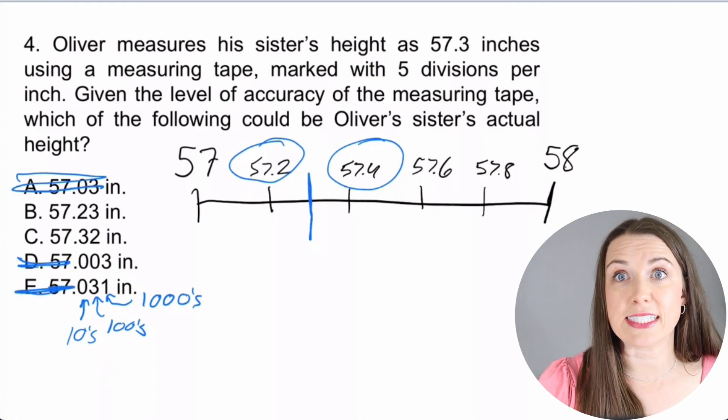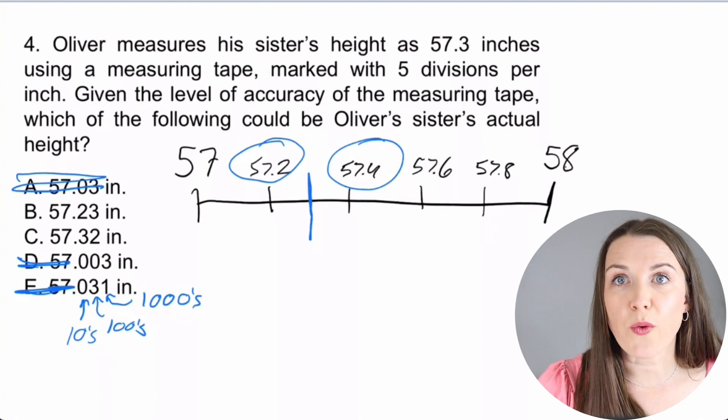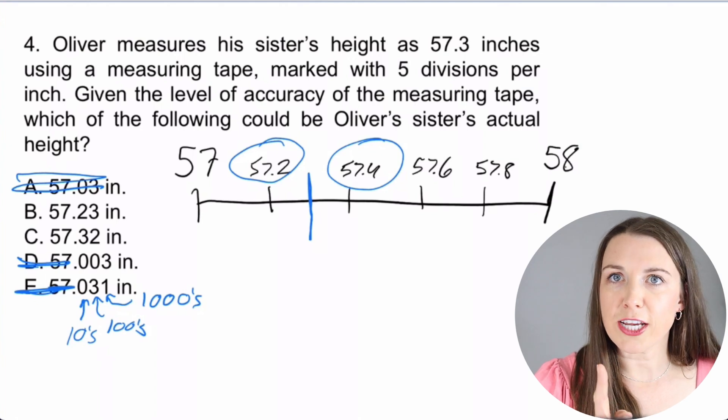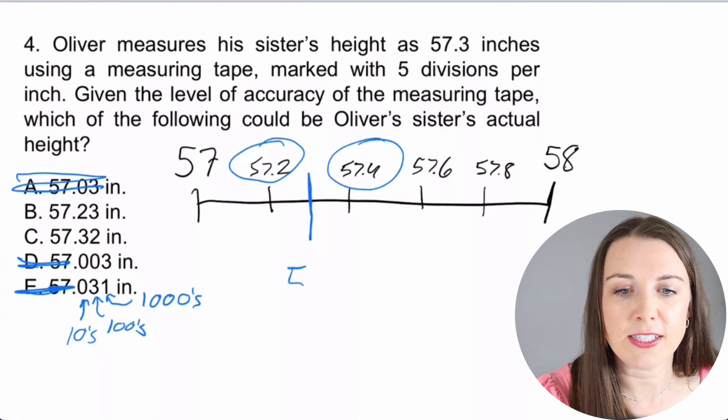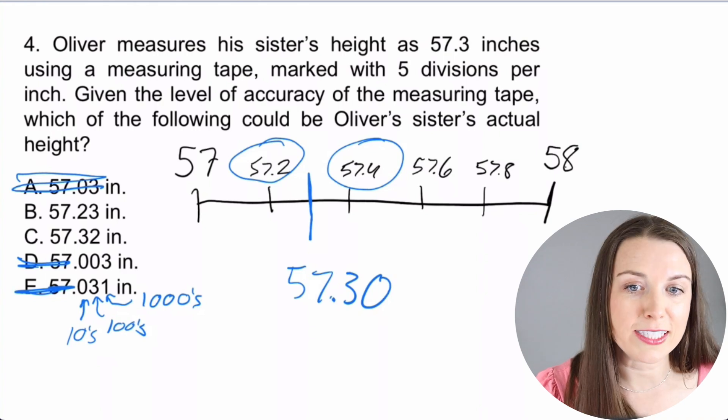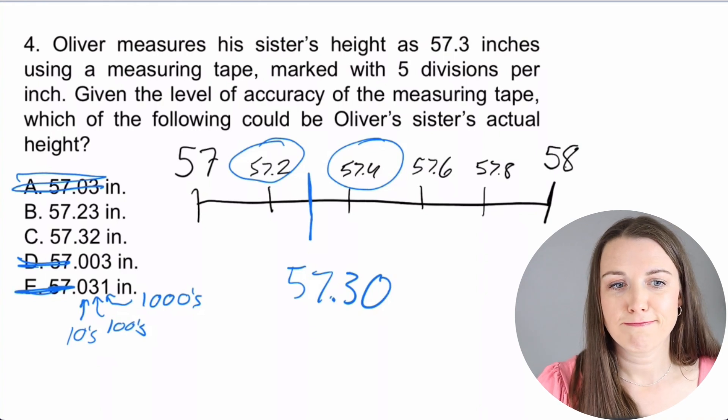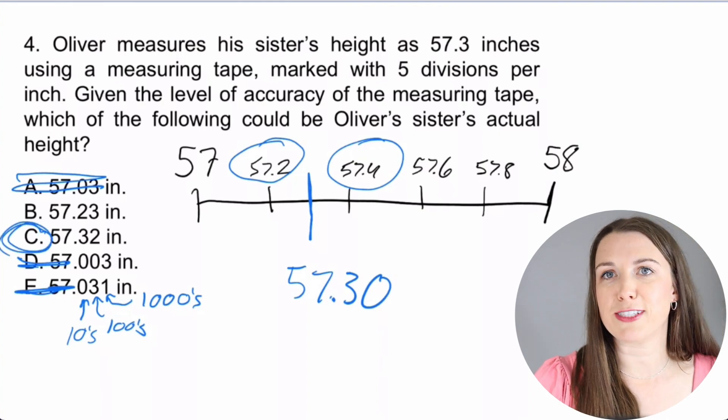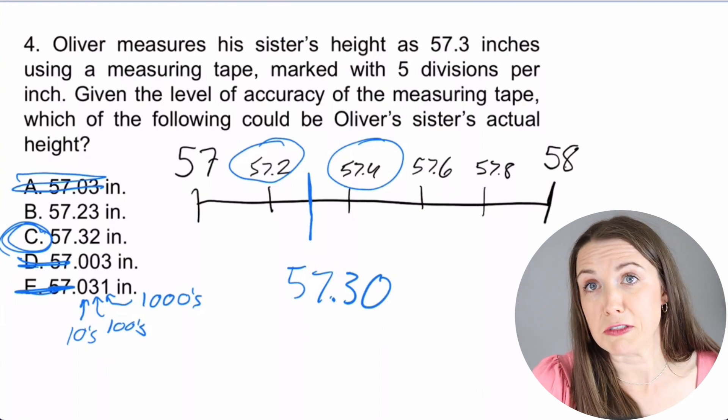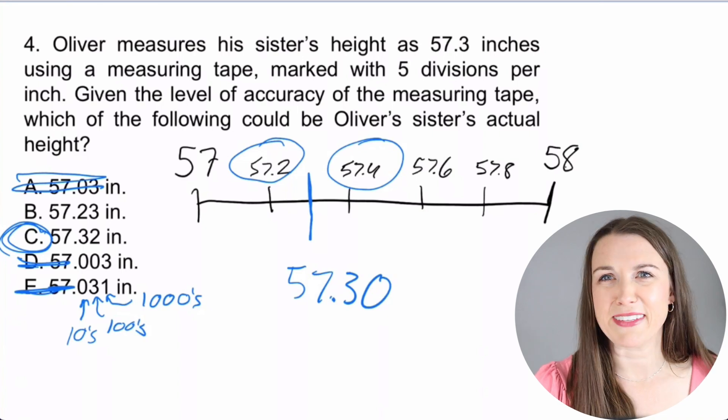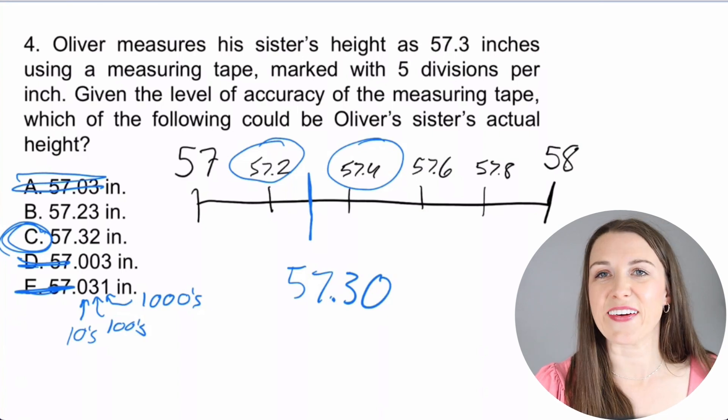And we're left with B and C. So which one is closest to 57.3? Well, let's change our 57.3 and say it's 57.30. So now looking at B and C, which one is closest to 57.30? That would be C, right? B is actually closer to 57.2. So he would just say 57.2. But here he measured close to 57.3, even though it's just a little bit off, it's okay. So C, my friends, is our answer.